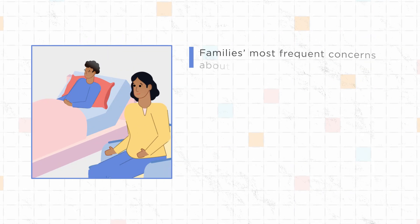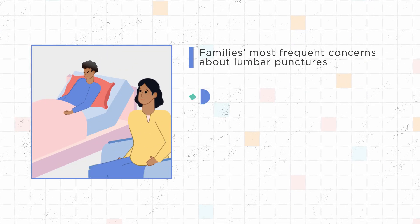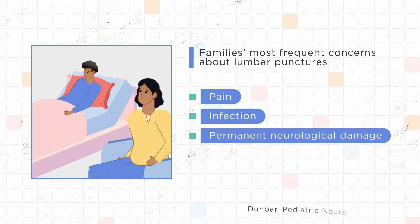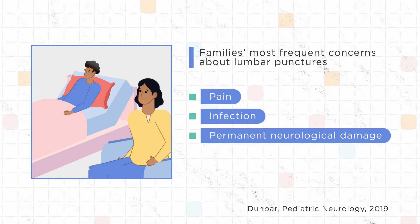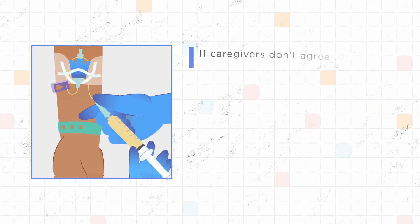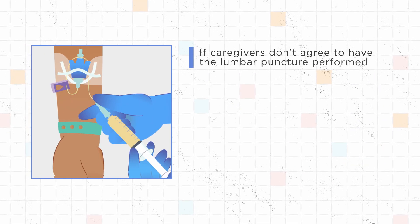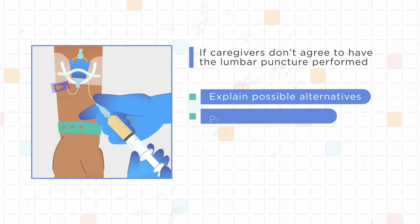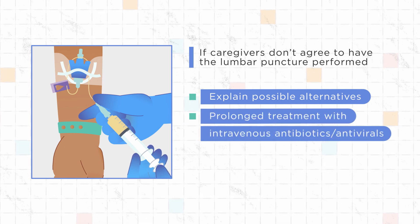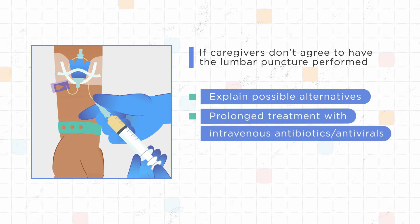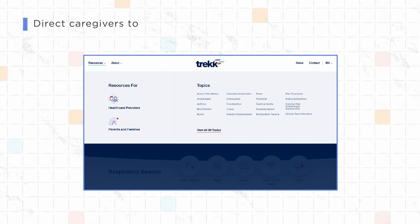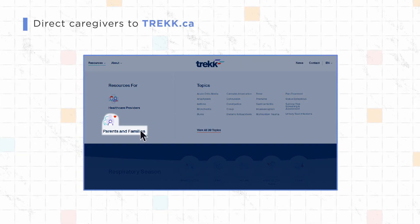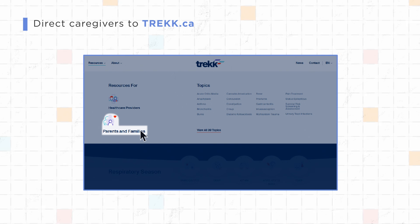Families' most frequent concerns about lumbar punctures are pain, infection, and permanent neurologic damage. If caregivers don't agree to have the lumbar puncture performed, explain possible alternatives such as prolonged treatment with intravenous antibiotics. Direct caregivers to TREC.ca, under the Parents and Families Resources tab, for more information on meningitis.